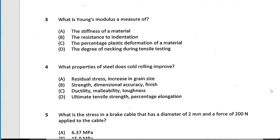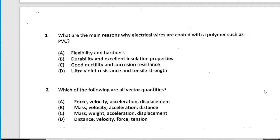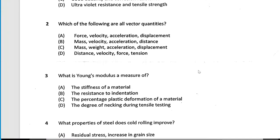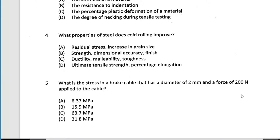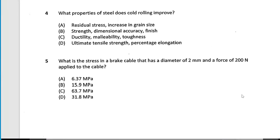Some questions: why do we use PVC? It's flexible. You shouldn't use the word 'durability' in the HSC — use wear resistance, corrosion resistance, or service life instead. An excellent insulation property — yes, that'll do. Which are vectors — you should be able to figure that out. Young's modulus is a measure of stiffness. What property does cold rolling improve? Strength, dimensional accuracy, and finish.